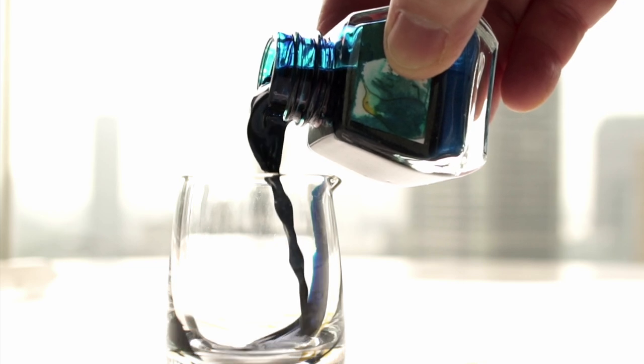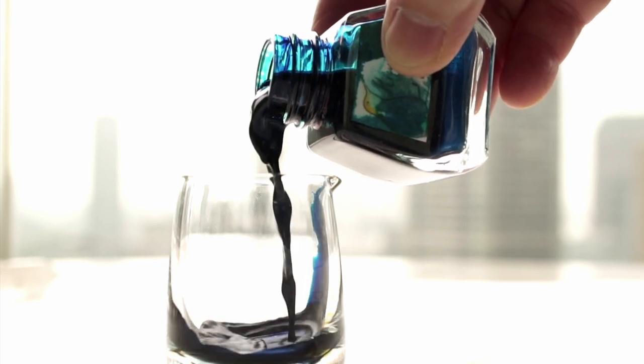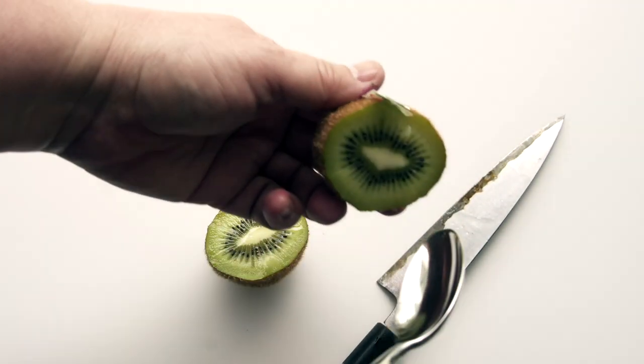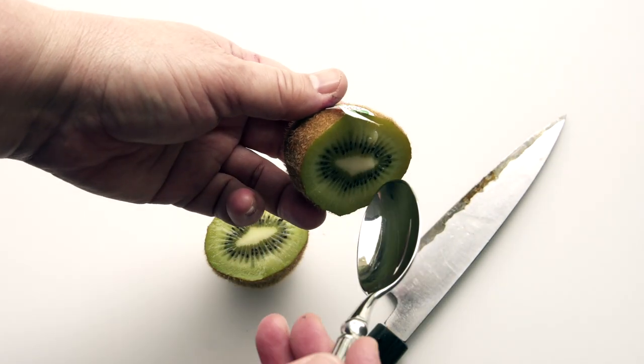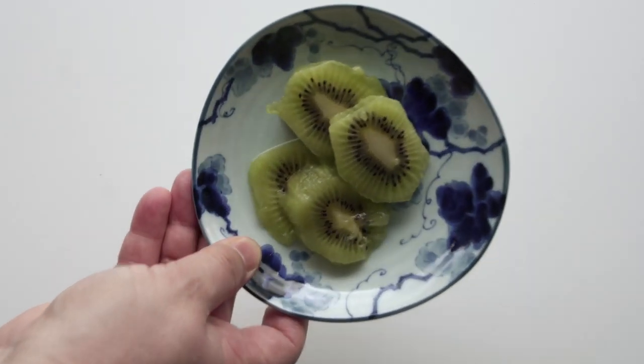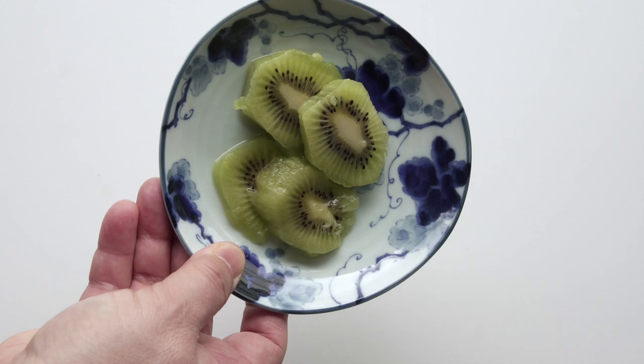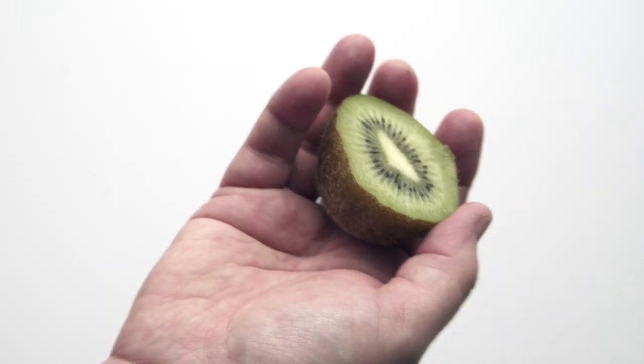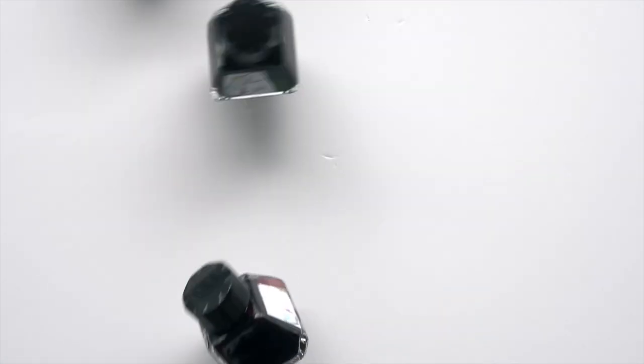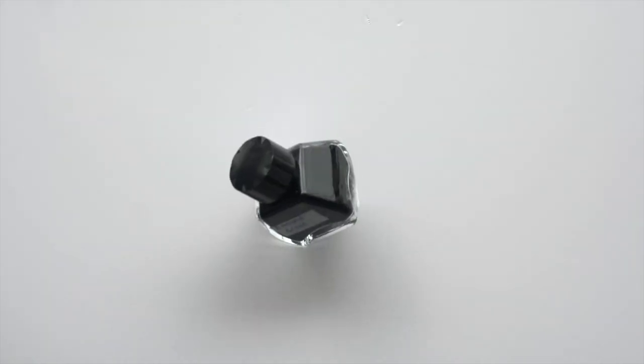Then there are several ways that you can eat a kiwi. You can slice it in half and then use a spoon to scoop it out, you can peel it and then slice it up, or you can squeeze it and get kiwi ink. You saw that one coming, didn't you?